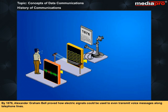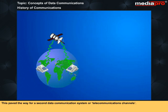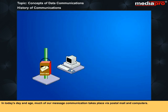In 1876, Alexander Graham Bell proved how electric signals could be used to even transmit voice messages along telephone lines. This paved the way for a second data communication system, or telecommunication channel. In today's day and age, much of our message communication takes place via postal mail and computers.